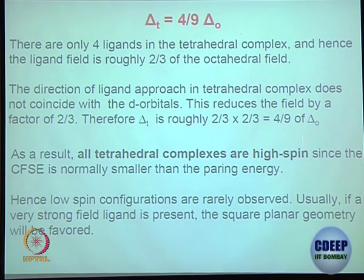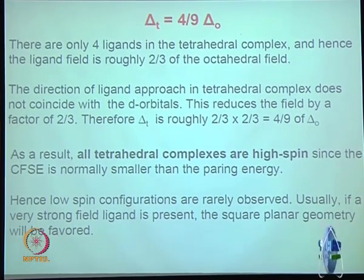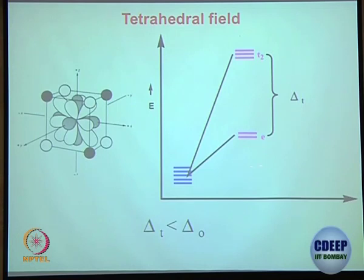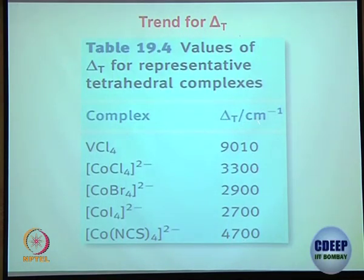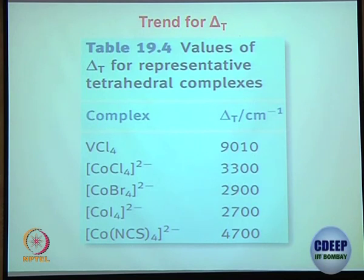All tetrahedral complexes are high spin because the splitting is less. To summarize: octahedral and tetrahedral are completely different — T2g lower, Eg up for octahedral; E lower, T2 up for tetrahedral. Delta octahedral values are 20,000–25,000 and so on, while delta tetrahedral is always very small in number compared to the corresponding octahedral complex.